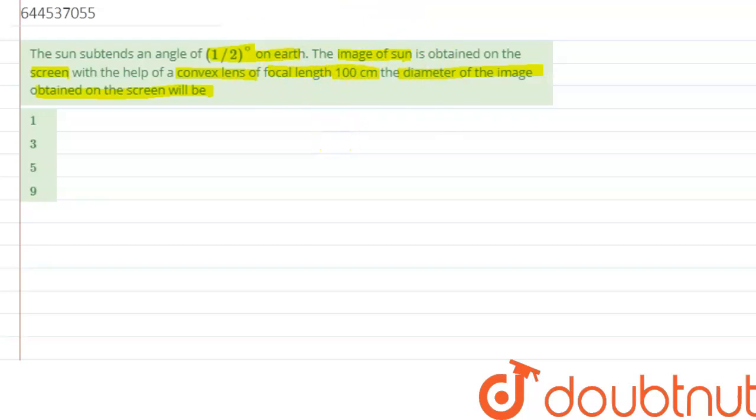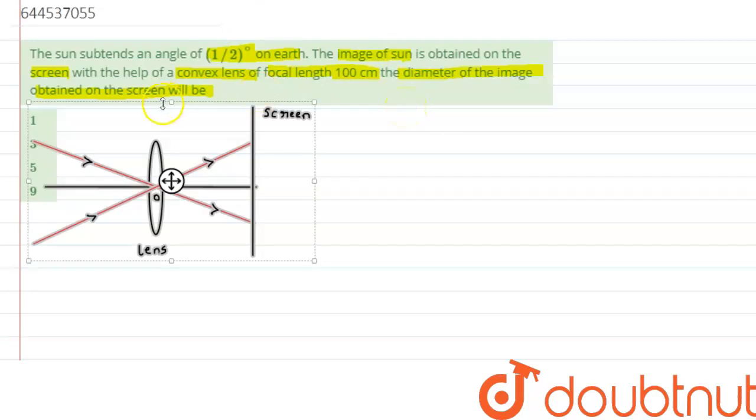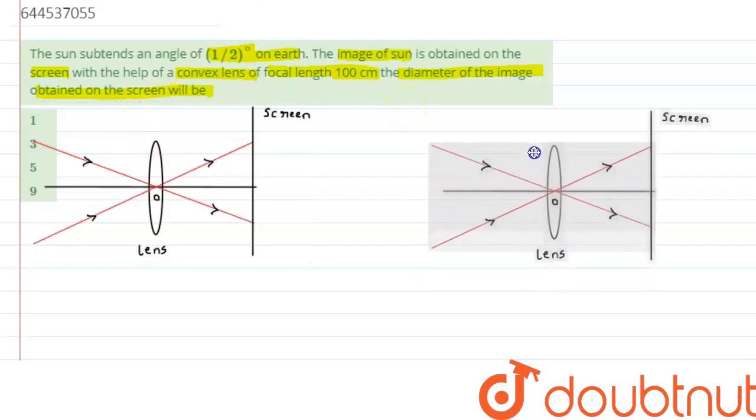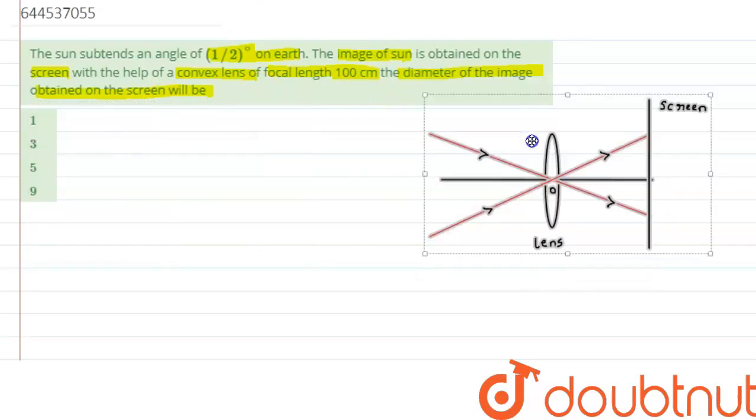We are projecting the image of the sun with the help of a convex lens. Let's understand this with a diagram. Here we can see a convex lens on which light rays from the sun, that is from infinity, are coming and incident on the lens.